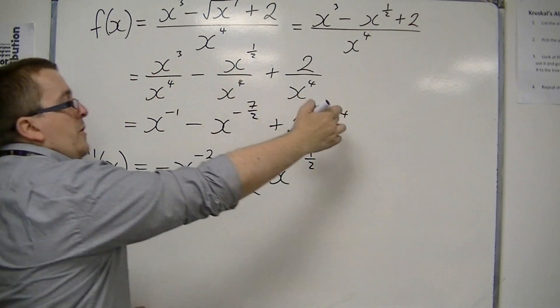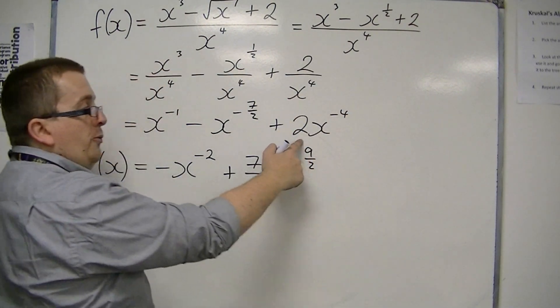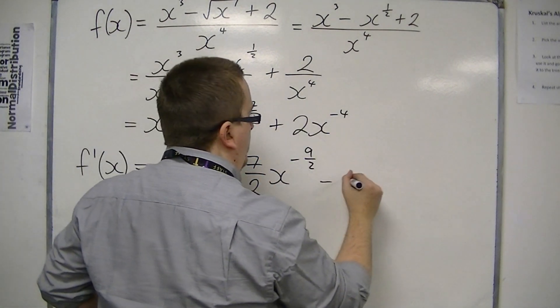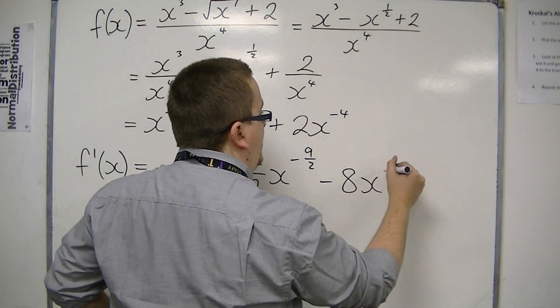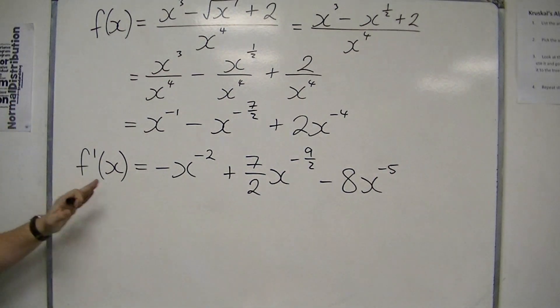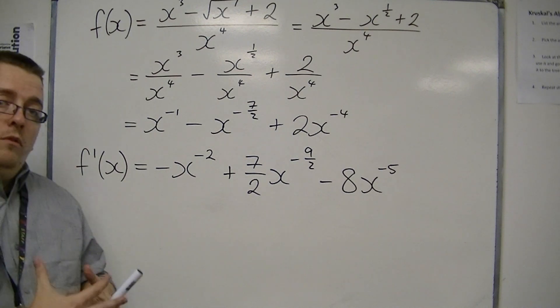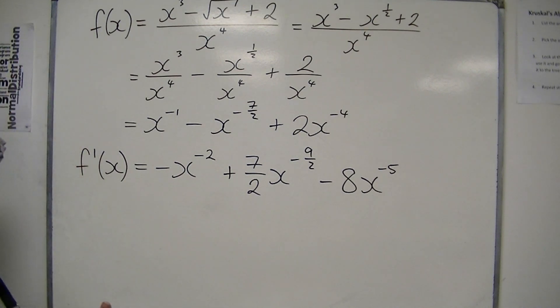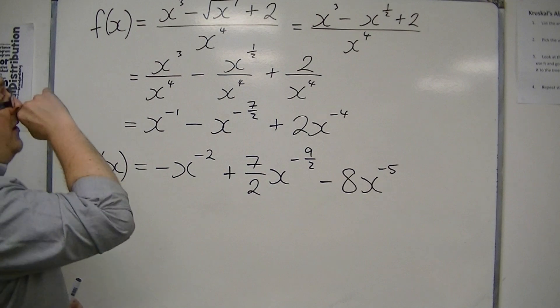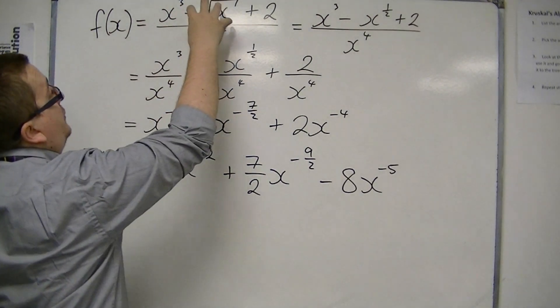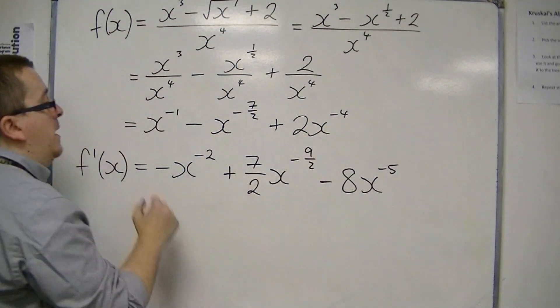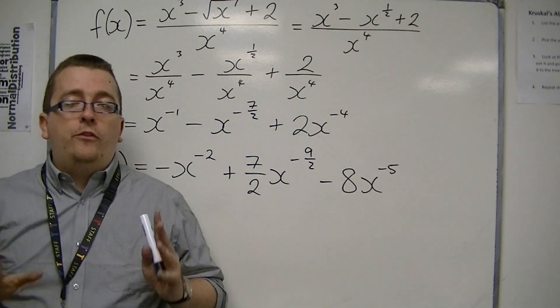And then the minus 4 comes down to the front, multiplies with the positive 2. So that's minus 8. And then take 1 off the power. And so now I have it in my differentiated form. It is a lot more involved than differentiation was normally, because you must get it from this stage to this stage before you differentiate. That's very important.